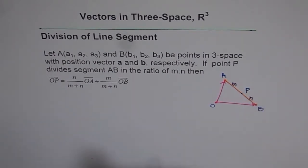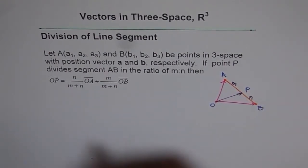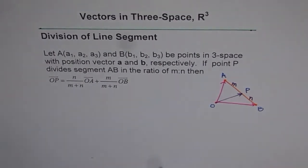So that is how P is dividing it into two parts in the ratio of M is to N. In that case, OP, that means this vector, OP is equal to whatever is given here. Now we have to prove that part.